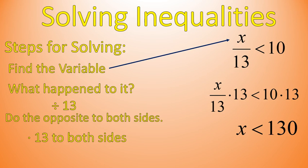So x divided by 13 times 13 is less than 10 times 13. Multiply 10 times 13, that gives you 130. x divided by 13 times 13 — 13 divided by 13 is 1, and 1 times x is just x. So we're left with x by itself on the left.